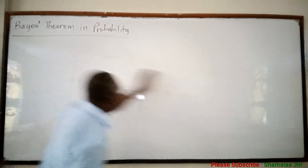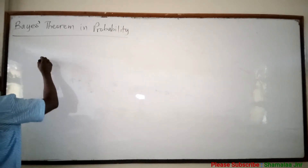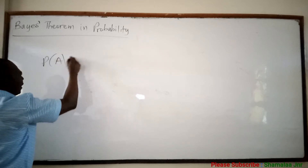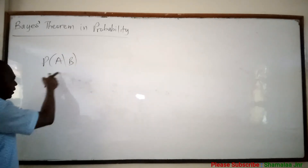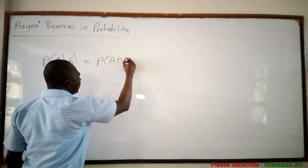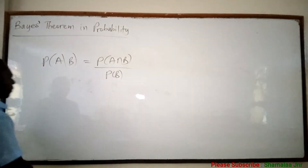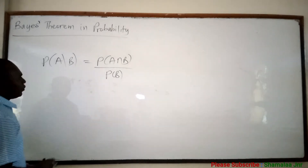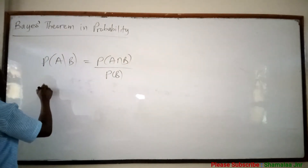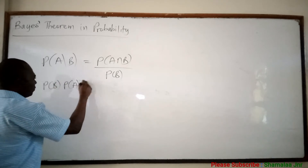Those who have watched the video on conditional probability will recall that the conditional probability of an event A given an event B, denoted P(A|B), is given by the probability of A and B over the probability of B. From here, if you make probability of A and B the subject, you are going to have probability of B times probability of A given B.